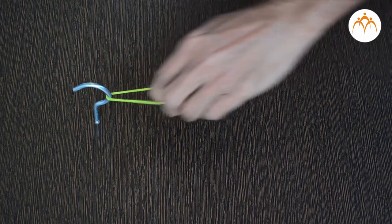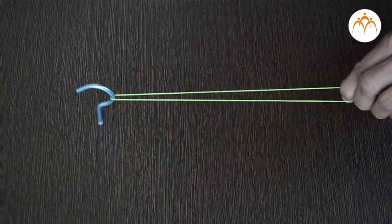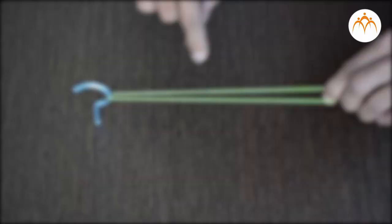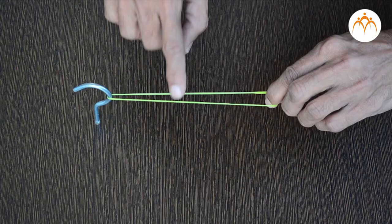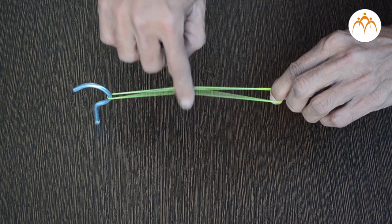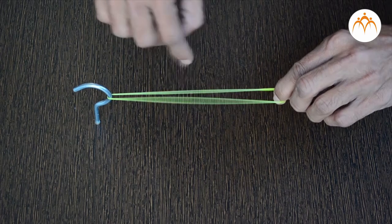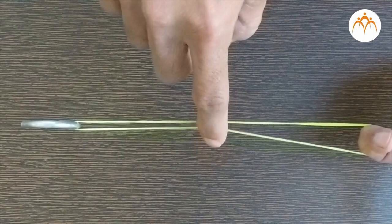We will stretch out the rubber band with one hand and pluck it with the other hand. Can you see it vibrating? Listen for the sound it makes. The sound gets quieter as vibrations die down.